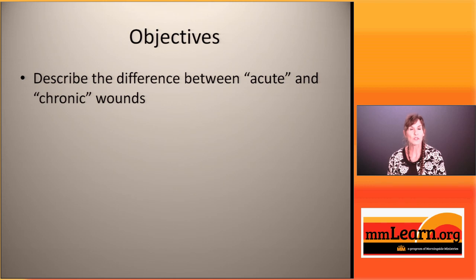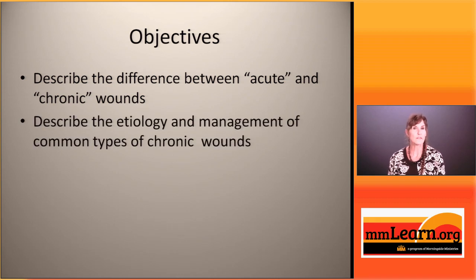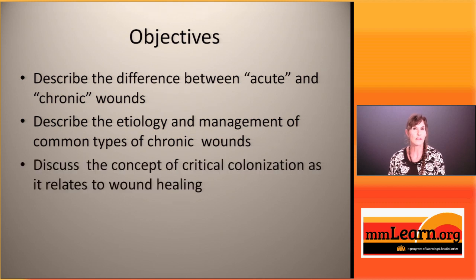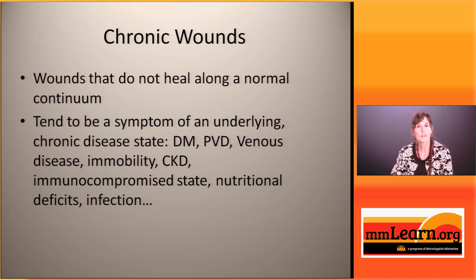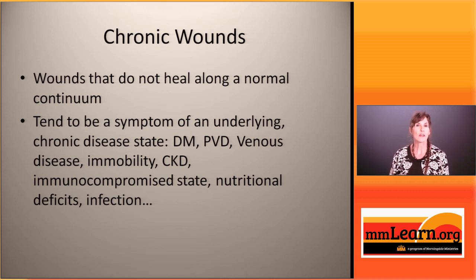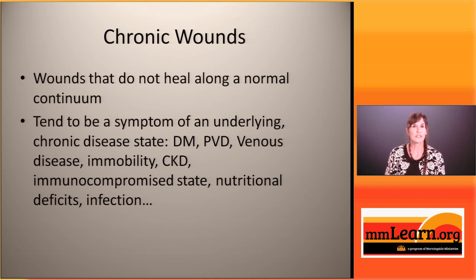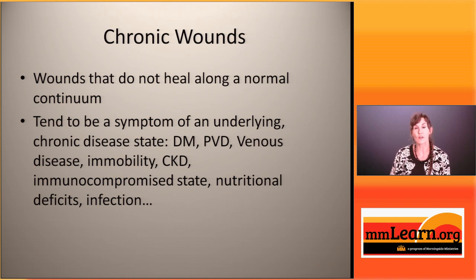Our objectives today include describing the difference between acute and chronic wounds, describing the etiology and management of common types of chronic wounds you will see in your practices, and discussing the concept of critical colonization as it relates to wound healing. Keep in mind that chronic wounds are wounds that do not heal along a normal wound healing trajectory. These wounds are often a symptom of an underlying chronic disease process such as diabetes, peripheral vascular disease, venous disease, immobility, or chronic kidney disease. Patients who are immunocompromised or have nutritional deficits or infection may also be at risk for chronic wounds.